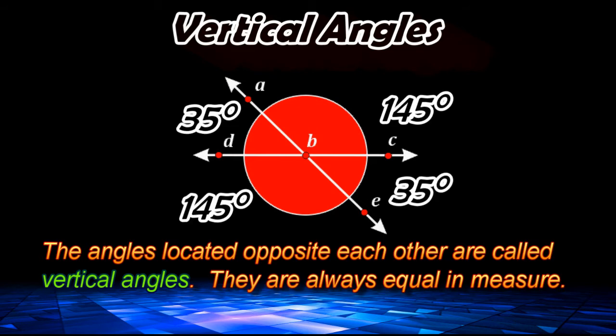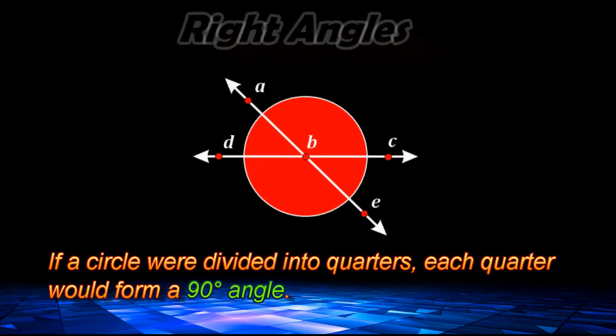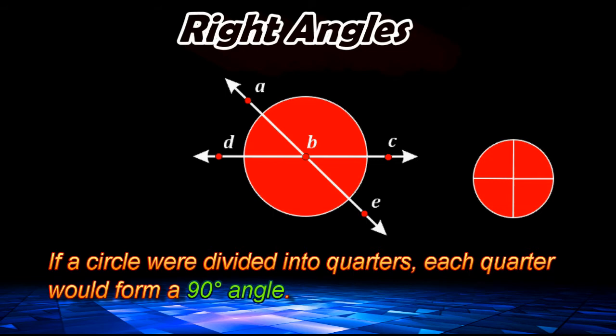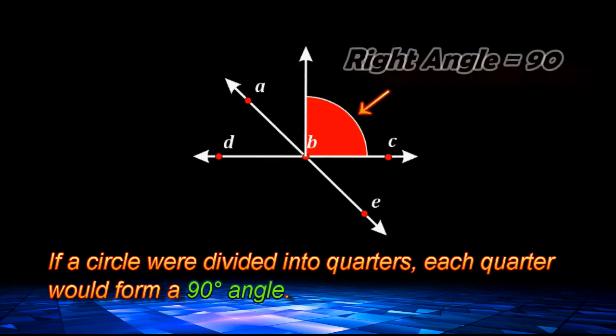Now, if we were to take the 360 degrees of a circle and divide it into four equal parts, each part would form a right angle, which measures 90 degrees. The lines that form any right angle are called perpendicular.